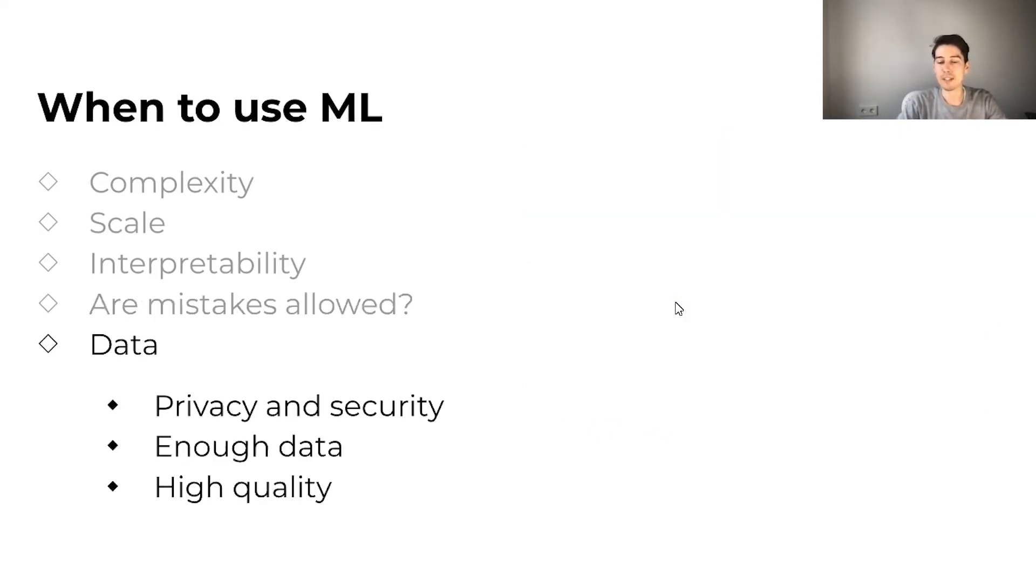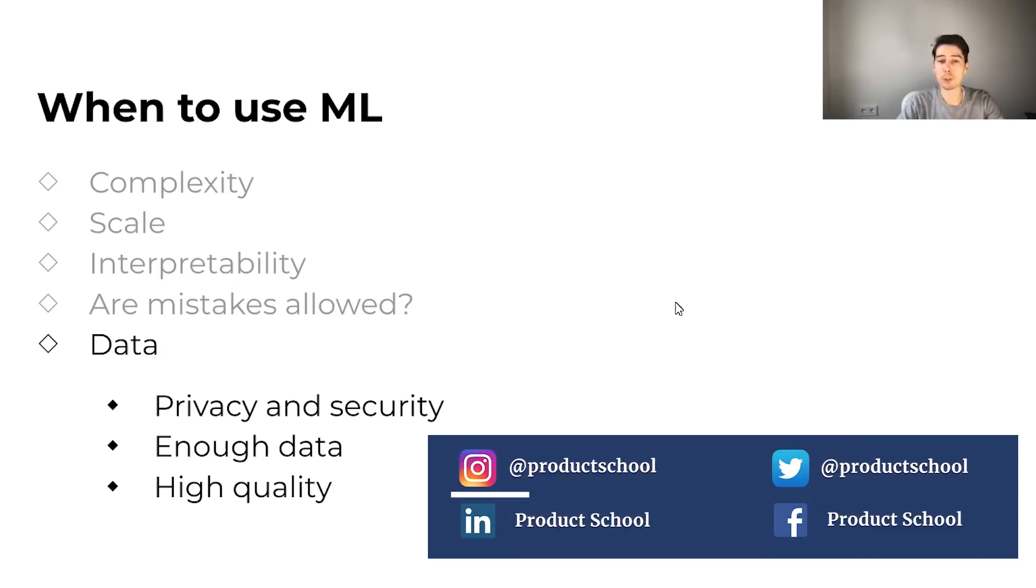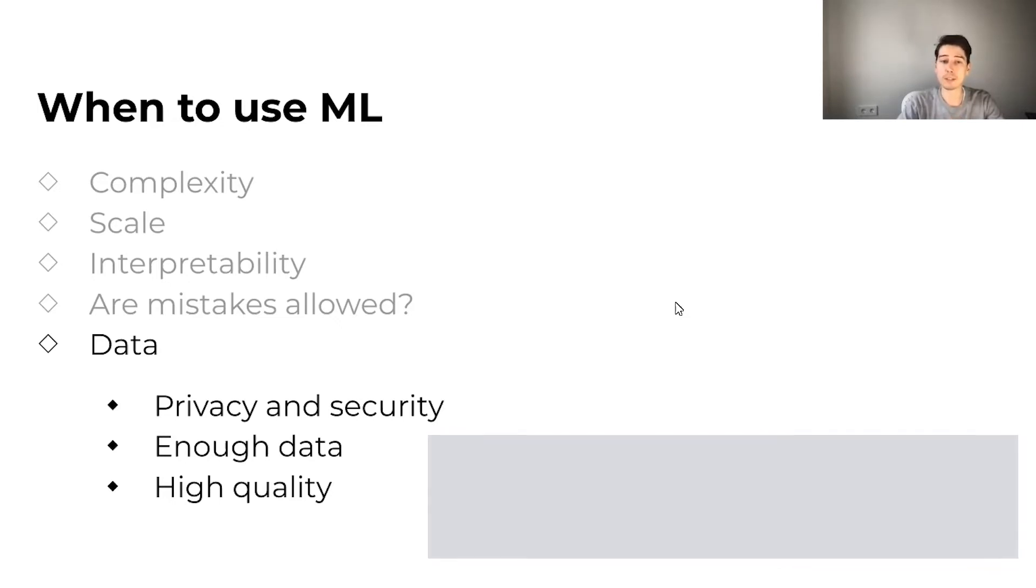And of course, the data. You need to think about privacy and security. Are your users fine with the way you're going to use their data? Are you following the local regulations? Is the data going to be stored securely? These are all important questions. You need to think about if you have enough data. And what is enough would depend on your use case and the desired quality of a model. And of course, your data should be of high quality, meaning it would be fresh, it would be relevant to your use case. It wouldn't have any sort of mistakes or biases against different types of users.